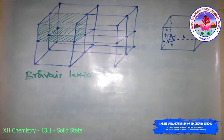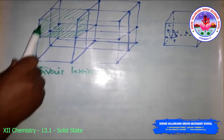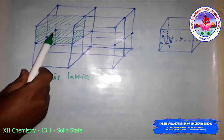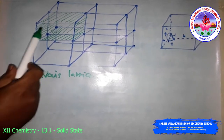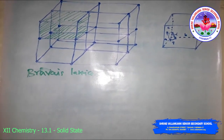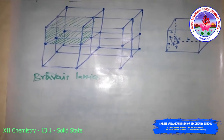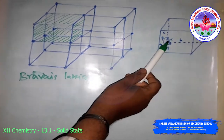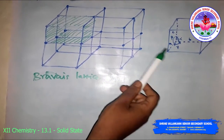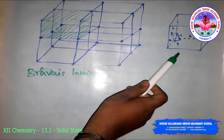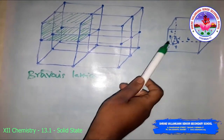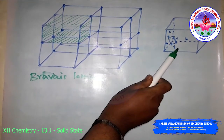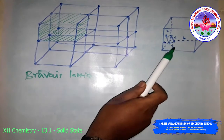The parameters of the unit cell: the unit cell is the smallest portion of a crystal lattice which, when repeated in different directions, generates the entire lattice. Unit cells are characterized by dimensions along three edges — A, B, and C — which may or may not be mutually perpendicular, and by the angles alpha, beta, and gamma between those edges.